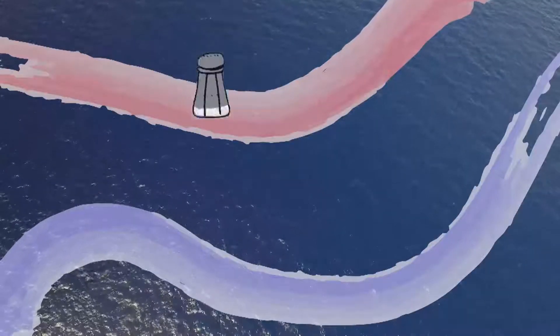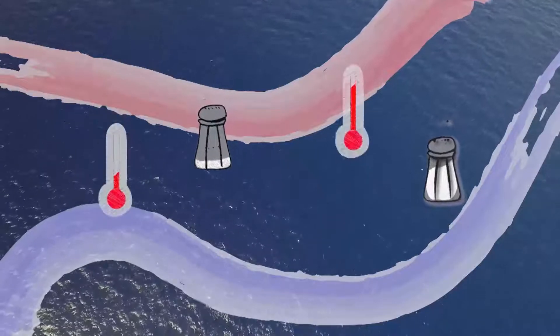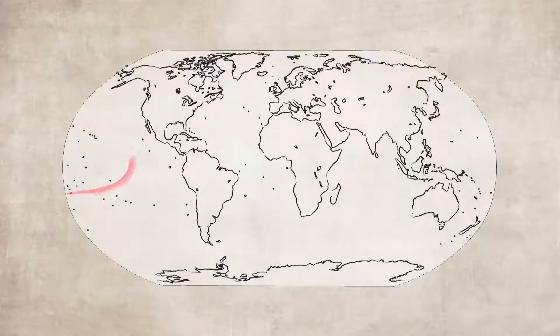The thermohaline circulation is the ocean circulation that is created by the difference of heat and salt in different places of the ocean on Earth. The thermohaline circulation is a global scale circulation.